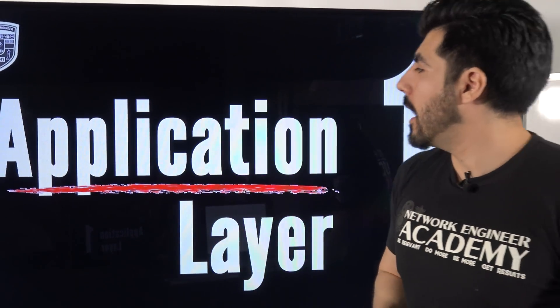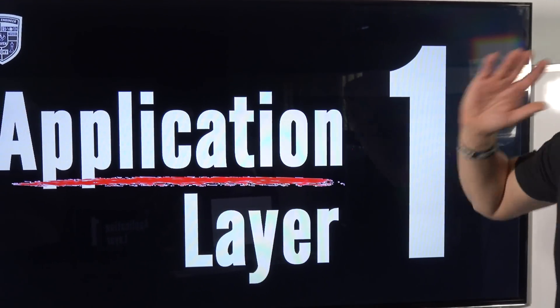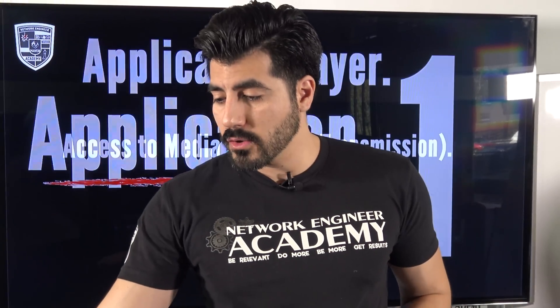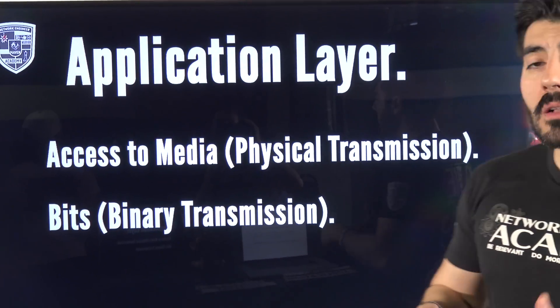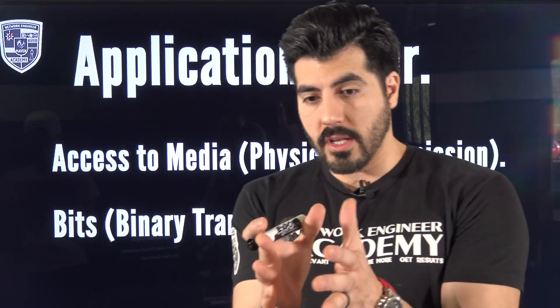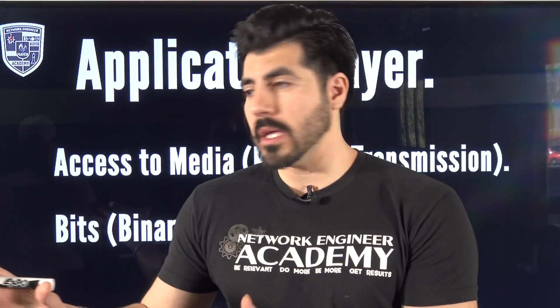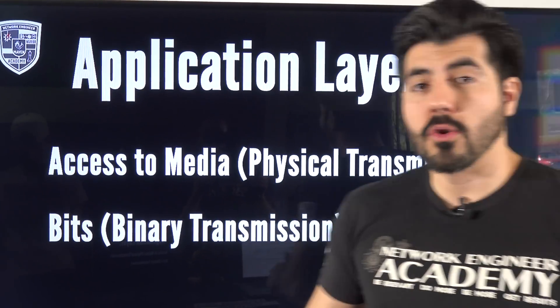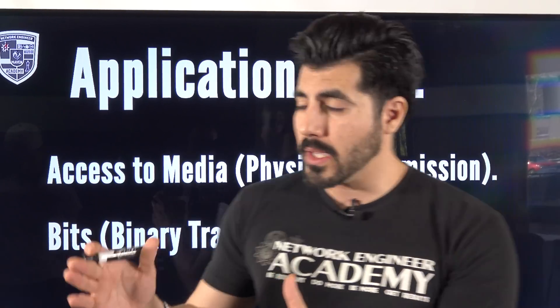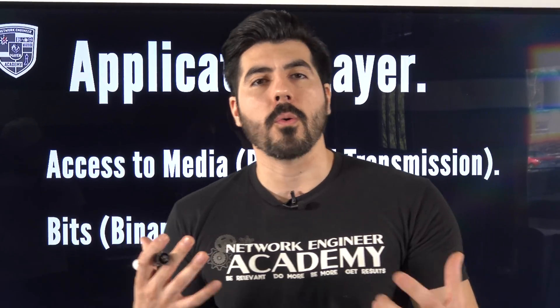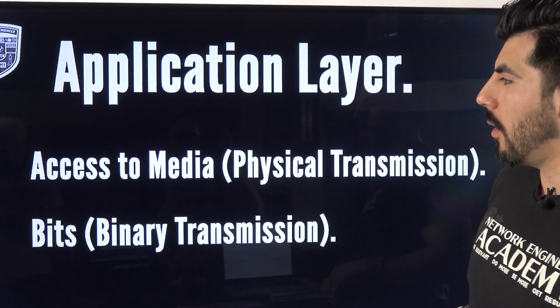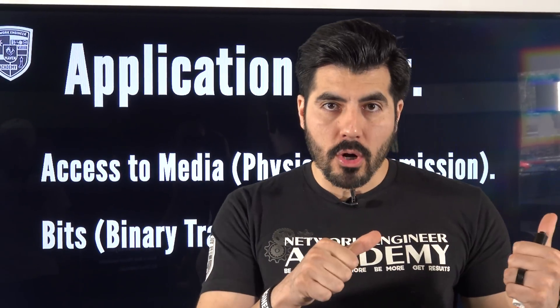The last layer, layer one, is the physical layer. It covers access to media and physical transmission — this is where bits, ones and zeros, travel from point A to point B. They can travel through electrical signals via copper cable, through light via fiber optic, or through radio waves via wireless.